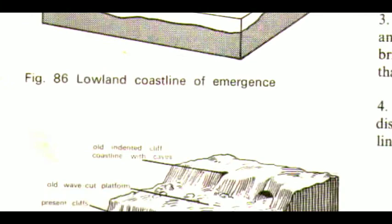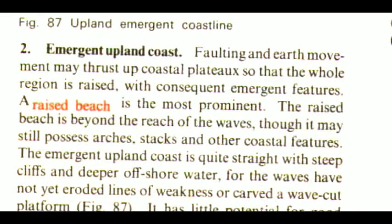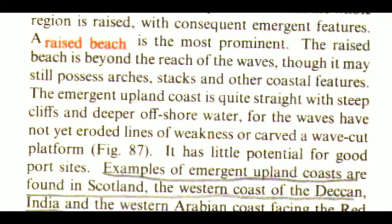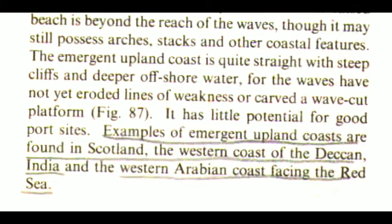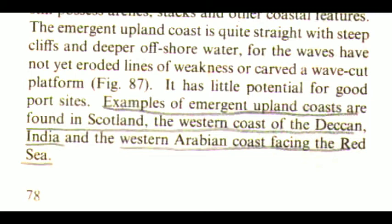The second one is emergent upland coast. Faulting and earth movement may thrust up coastal plateaus so that the whole region is raised. With consequent emergent features, a raised beach is the most prominent. The raised beach is beyond the reach of the waves, though it may still possess arches, stacks and other coastal features. The emergent upland coast is quite straight with steep cliffs and deeper offshore water, for the waves have not yet eroded lines of weakness or carved a wave-cut platform. It has little potential for good port sites. Examples of emergent upland coasts are found in Scotland, the western coast of the Deccan, India, and the western Arabian coast facing the Red Sea.